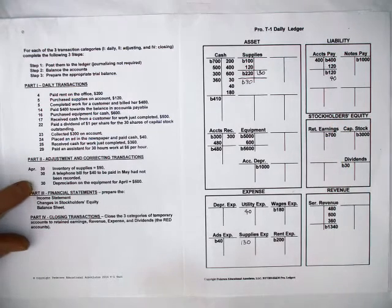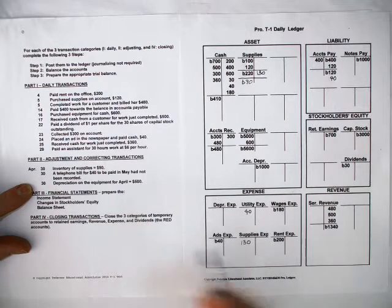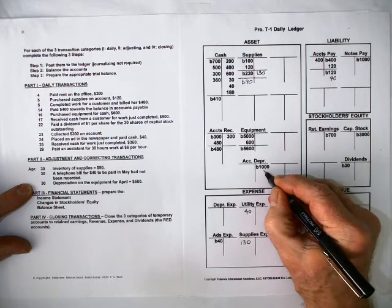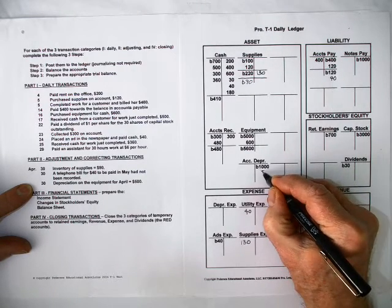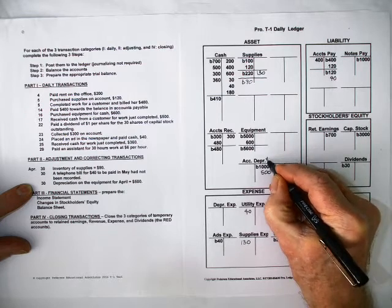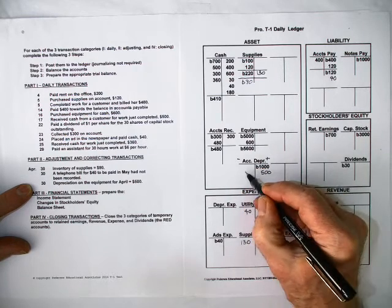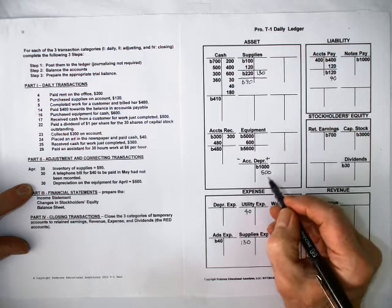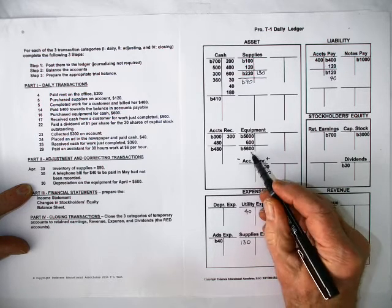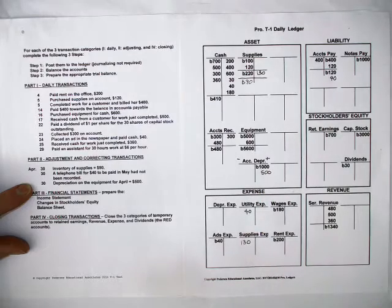And finally, we're going to depreciate our equipment for another period. The depreciation for April is $500, so what we're going to do is simply add it to the accumulated depreciation account. Don't forget, this is a contra account — it increases as a credit and decreases as a debit. And when we balance the account, that will be subtracted from the $5,600 on the balance sheet to give us our book value.